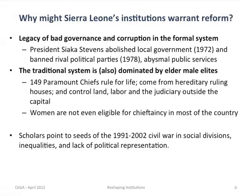That failure of governance wasn't just restricted to the central government. At the local government level, there's a traditional authority headed by chiefs that has been equally unrepresentative. There are 149 paramount chiefs in Sierra Leone — they rule for life, they're not democratically elected, they're elected by a small number of ruling families. There are very few checks and balances on their behavior and they have tremendous power, including responsibility for land allocation, the power to coerce labor, the ability to fine people, and judicial authority.